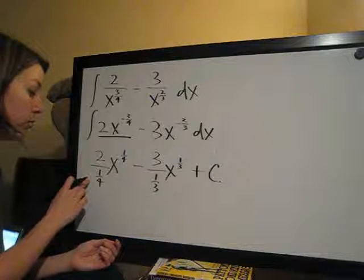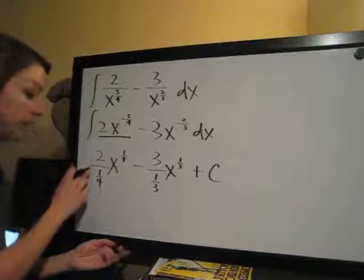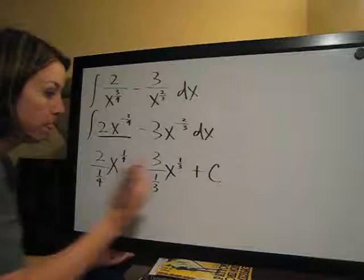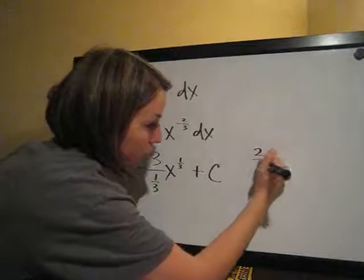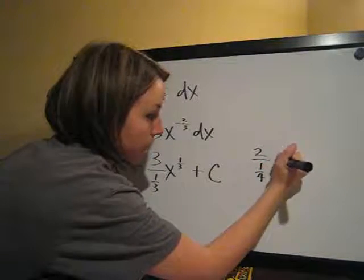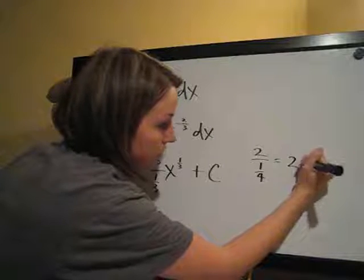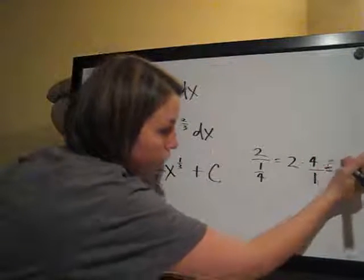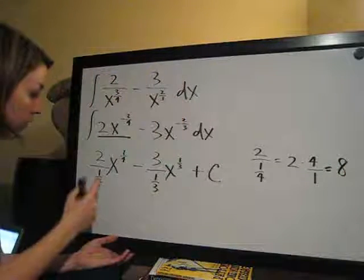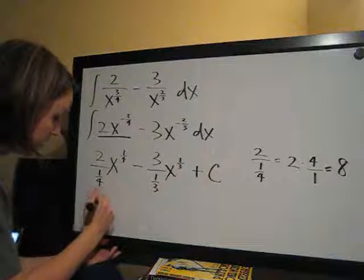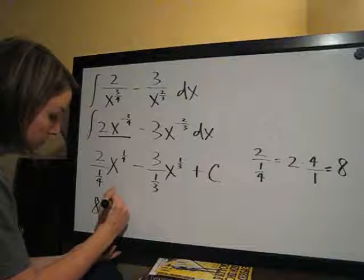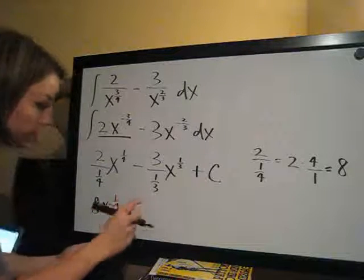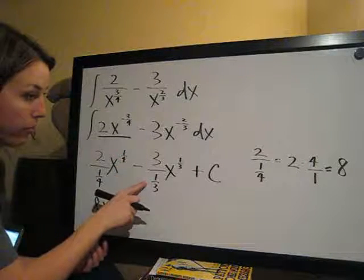So instead of 2 divided by 1 fourth, that's the same thing as saying 2 times 4 over 1. The answer to that, of course, is 8. So the answer here is 8x to the 1 fourth minus 3 divided by 1 third.